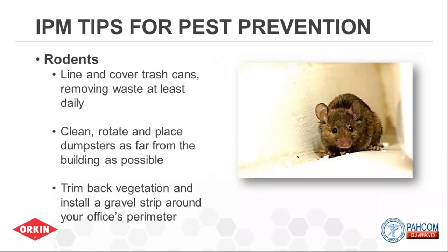Rodents are the other major disease-spreading pests. Line and cover trash cans because rodents constantly look for food sources — mice can get all their water from food, while rats need both food and water daily. Clean and rotate dumpsters, and store food trash as far from the facility as possible. If there's clutter near the building or exterior doors — even if it's not yours — talk to facility management about it, because clutter provides harborage for exterior rodents like house mice, deer mice, or rats.